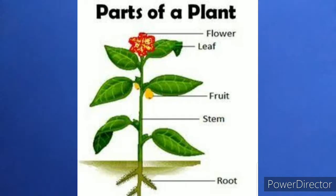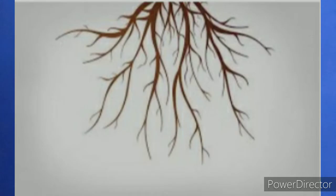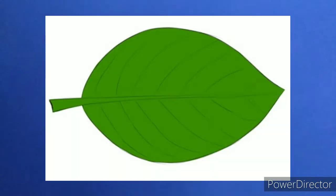See, the down part is called as root. See the picture here? This is root. And this picture is stem. And this is leaf.